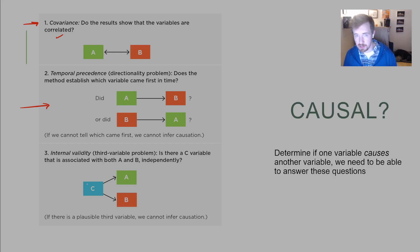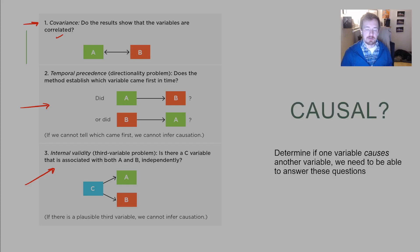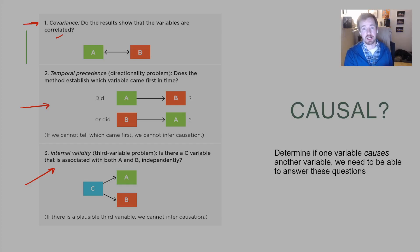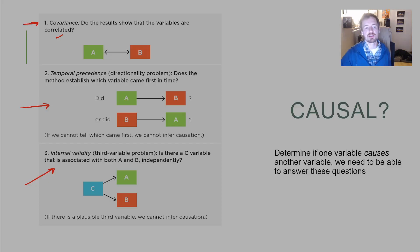We have to know which variable happened first so we can determine which is causing which — and that's something we typically can't establish with correlations. The third criterion is internal validity, which we discussed last chapter: ensuring there's no third confounding variable controlling the relationship between the independent and dependent variables.